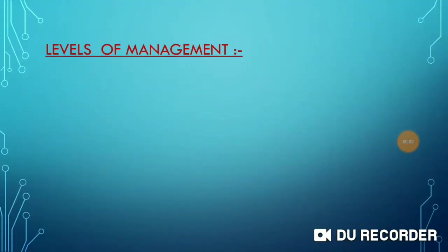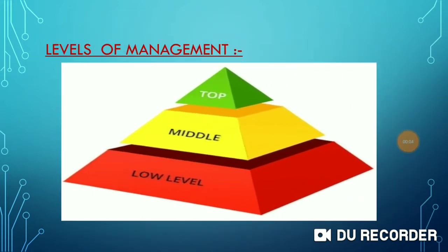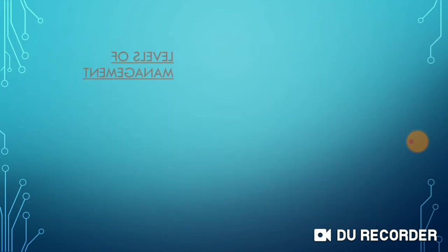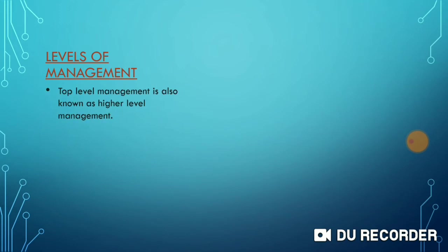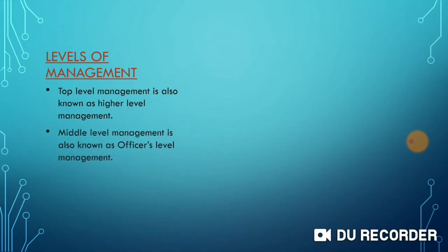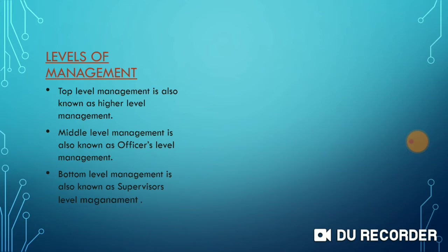Level of Management: There are three levels of management — Top Level, Middle Level, and Bottom Level. Top level management is also known as Higher Level Management. Middle level management is also known as Official Level Management. And bottom level management is also known as Supervisor Level Management.